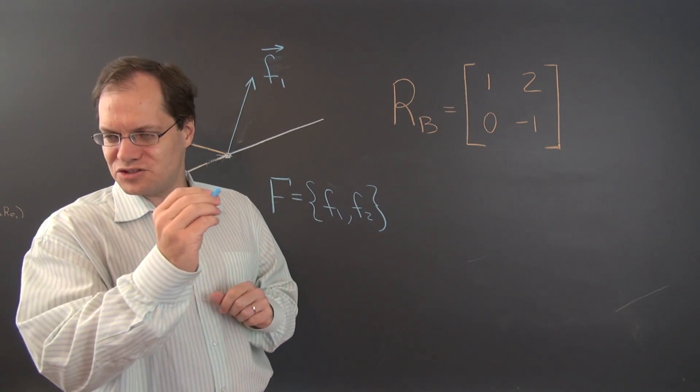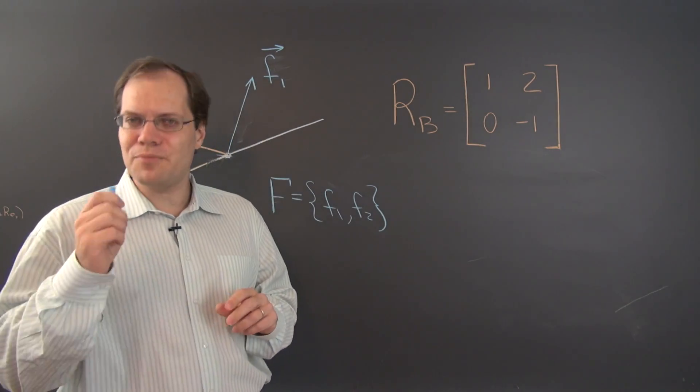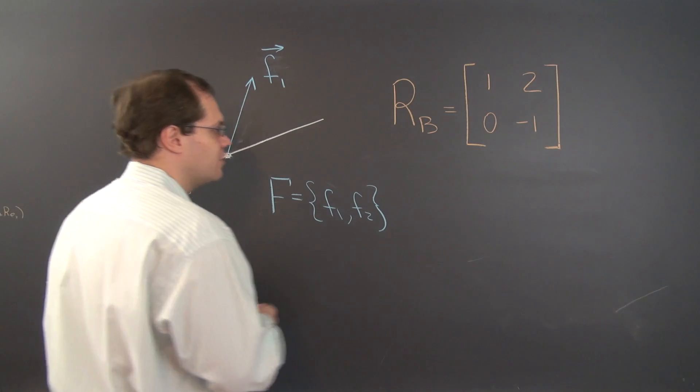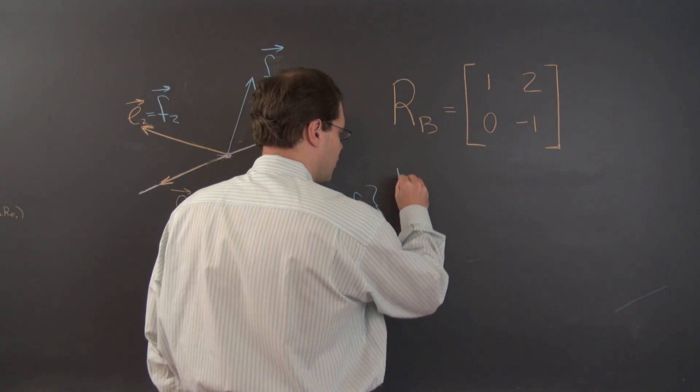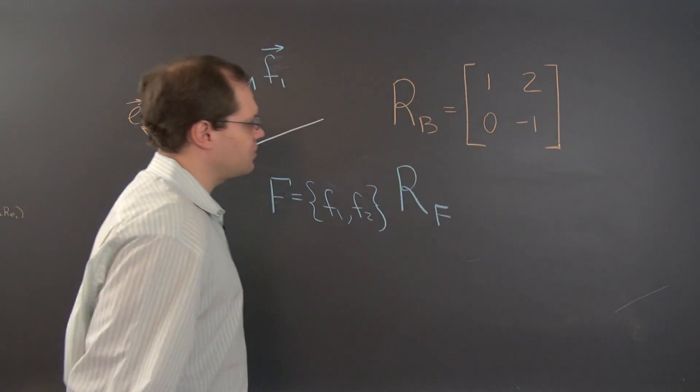And let's now figure out the matrix that represents this transformation with respect to this new basis f, which consists of f1 and f2. This chalk is actually blue, I'm not sure if you can see it on the screen, but I think it will come through as a different color. So we'll now construct r sub f.